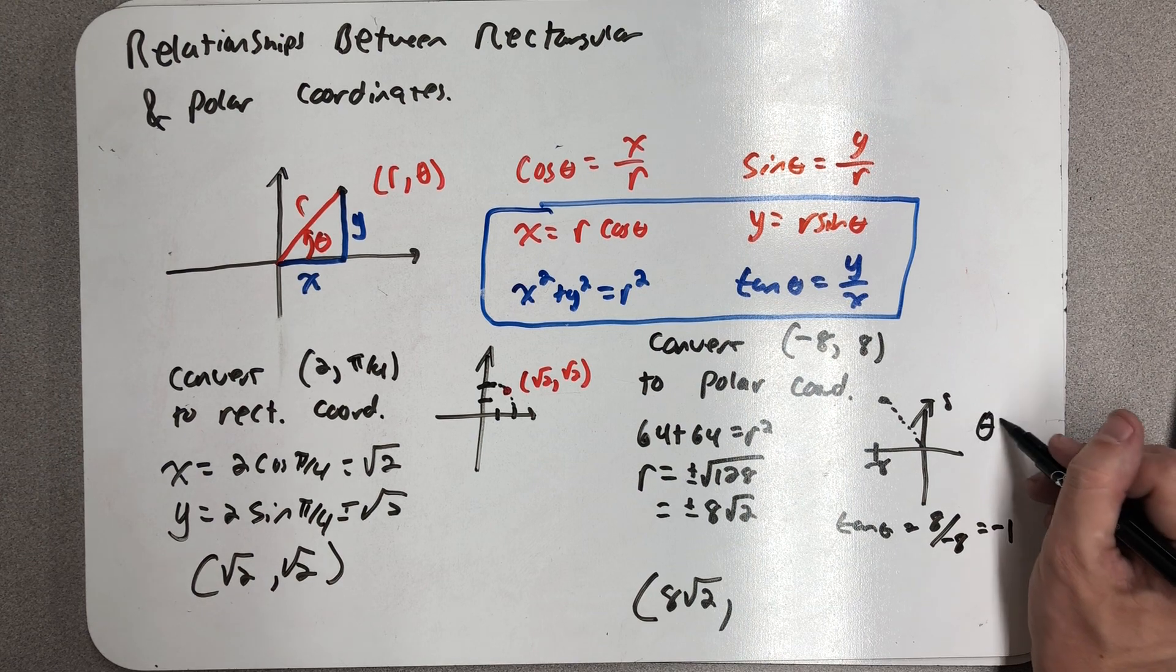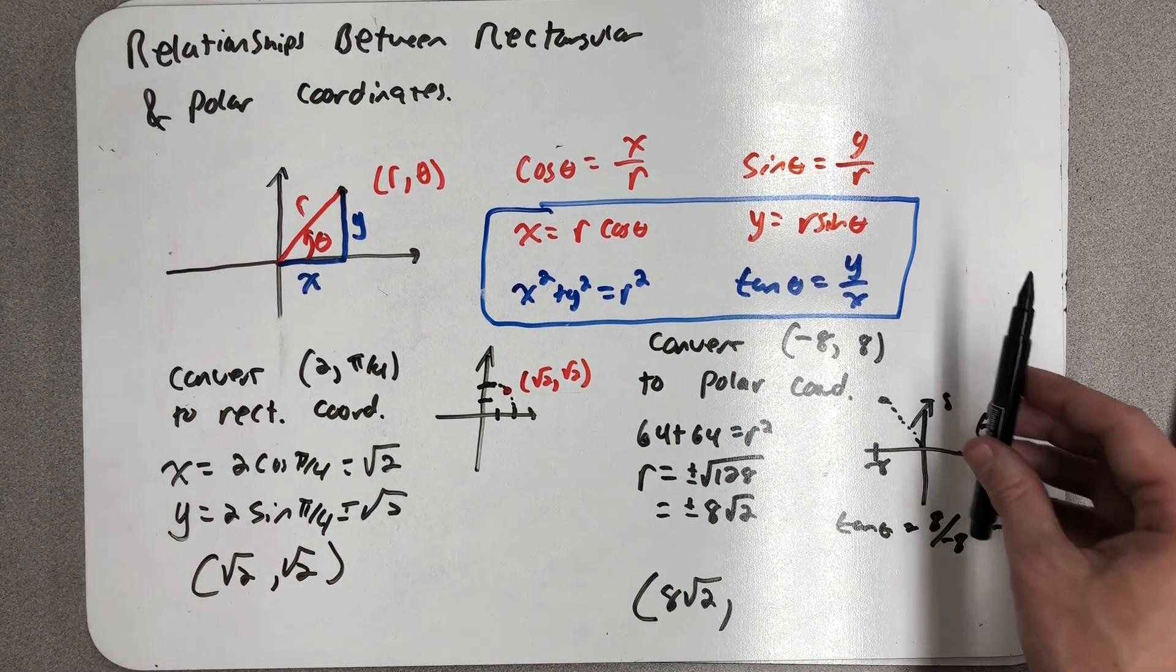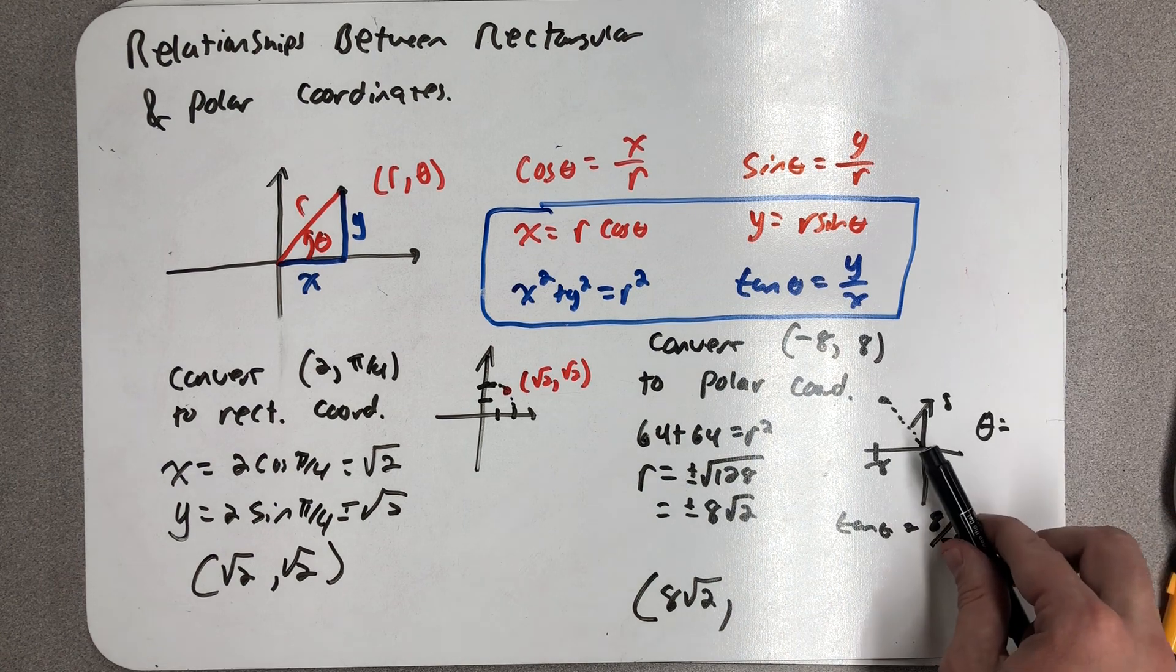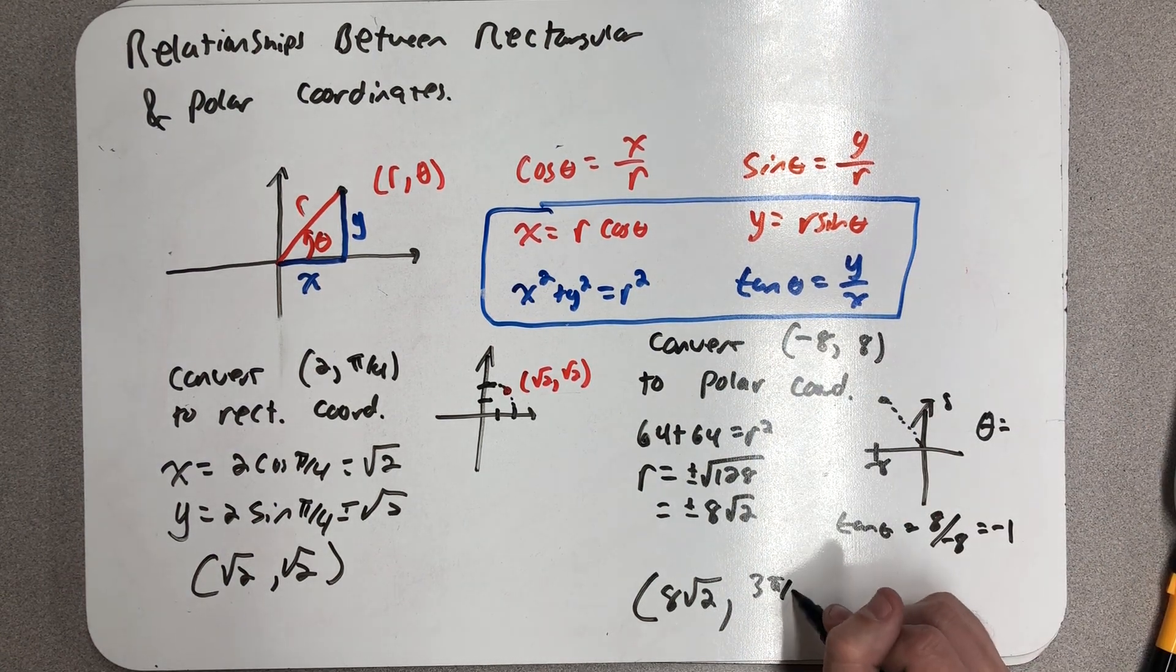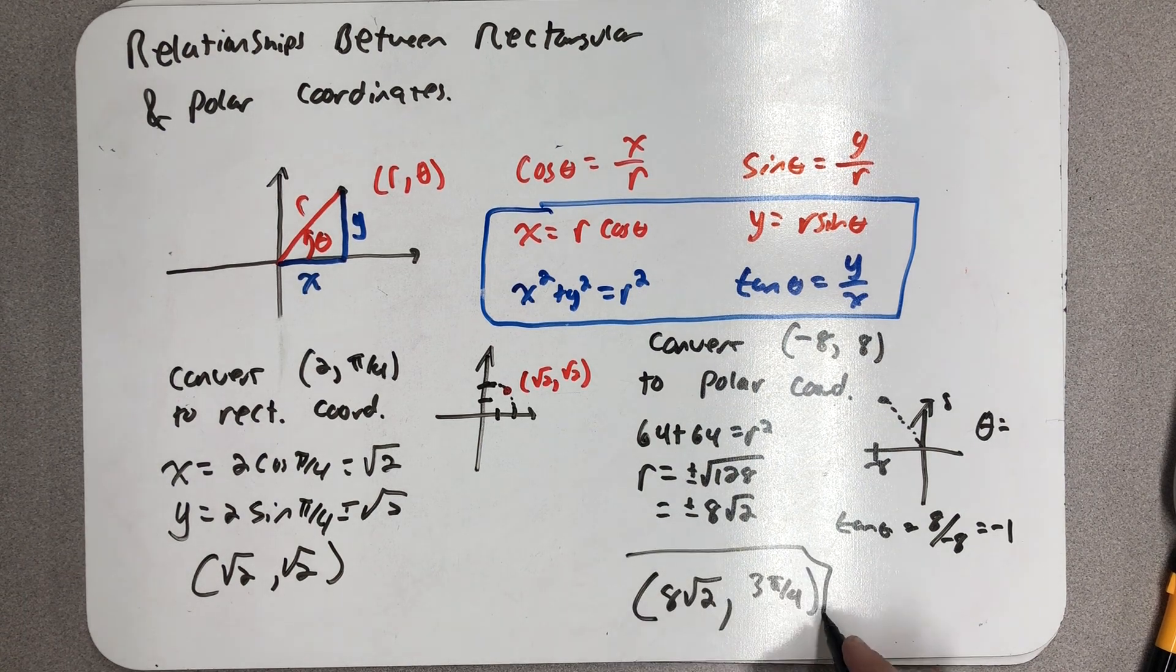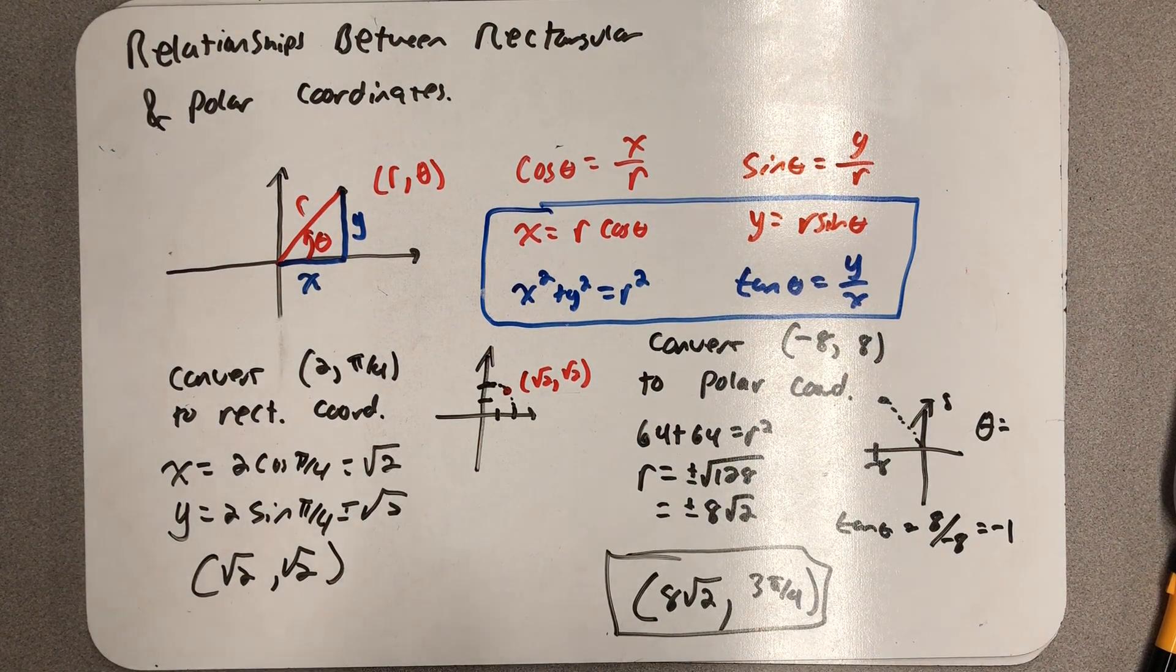I need angles where tangent of θ is -1. Well, that is either 3π/4 or 7π/4. By plotting the point, I know it's at 3π/4. And there is my nice, happy point.